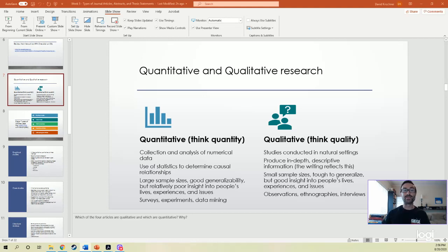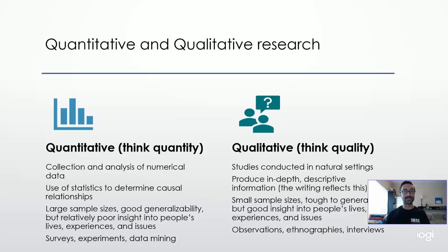There are two broad types of research questions that you will come across: quantitative and qualitative. Quantitative research involves the collection and analysis of numerical data — numbers. What is the root of quantitative? Quant. In Latin, quant means amount. So you can think about quantitative research as that which uses and reports numbers, quantities, quantifications.